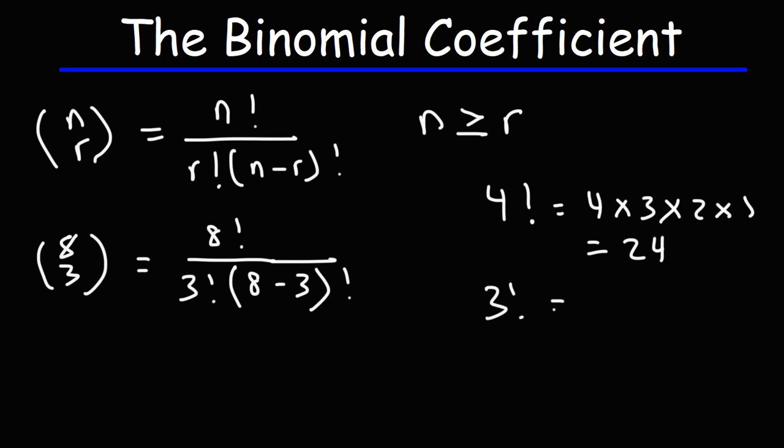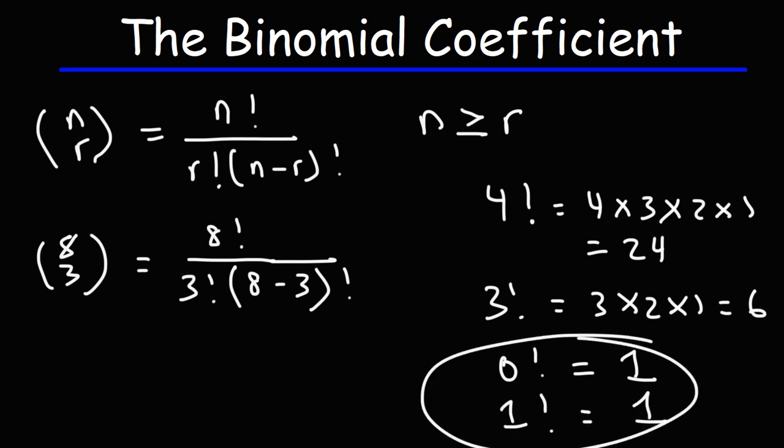3 factorial is simply 3 times 2 times 1, which is 6. 0 factorial is 1 and 1 factorial is also 1. So those are some things that you just need to commit to memorization.